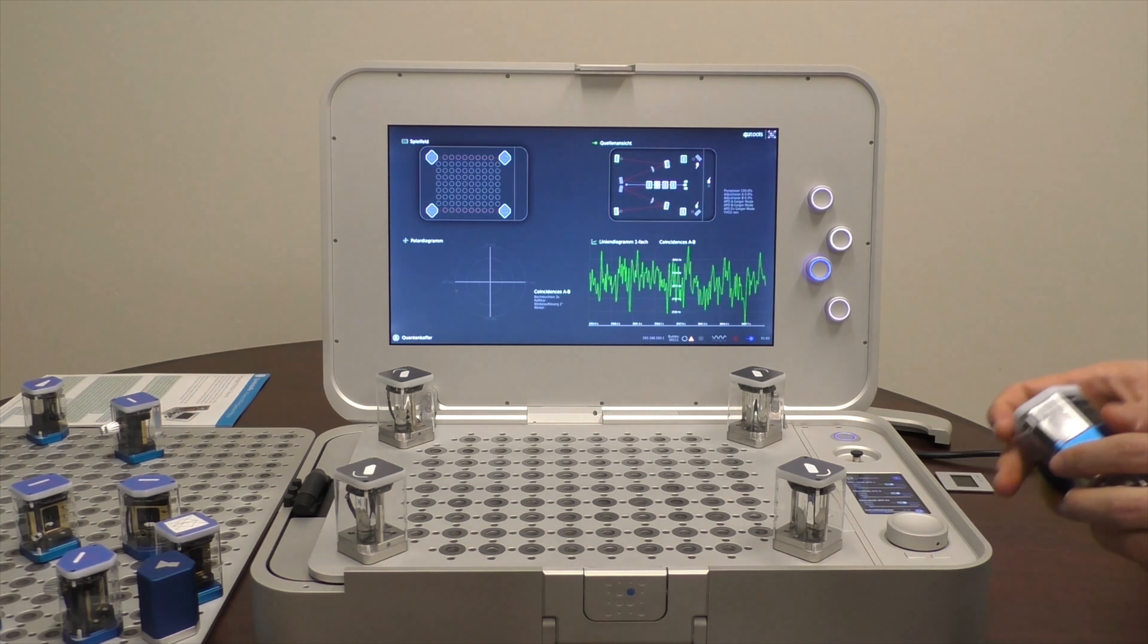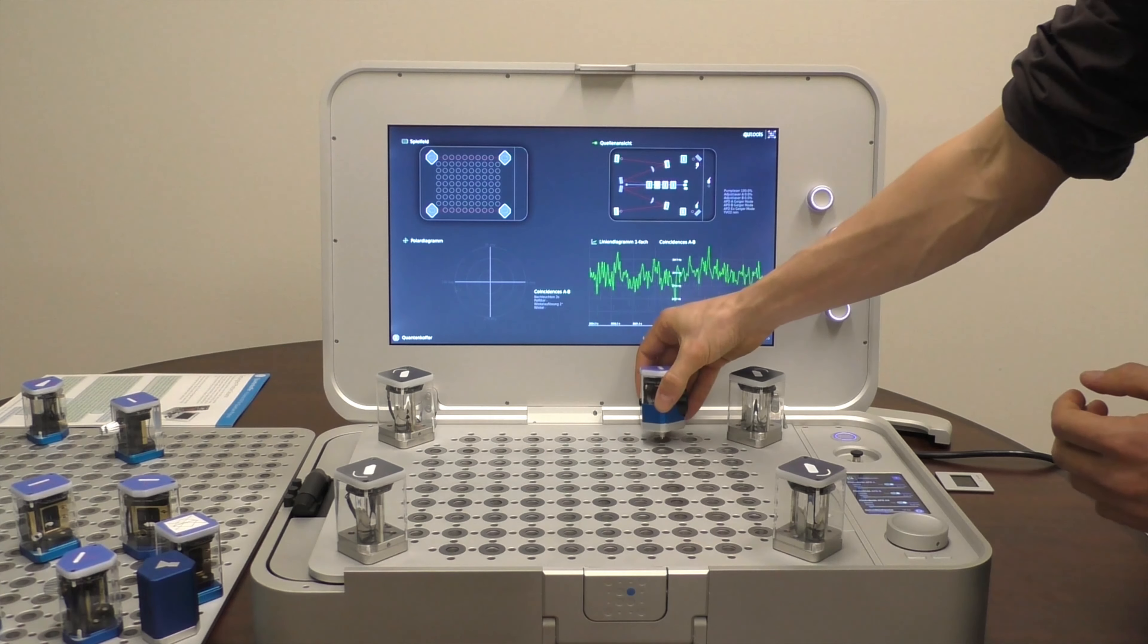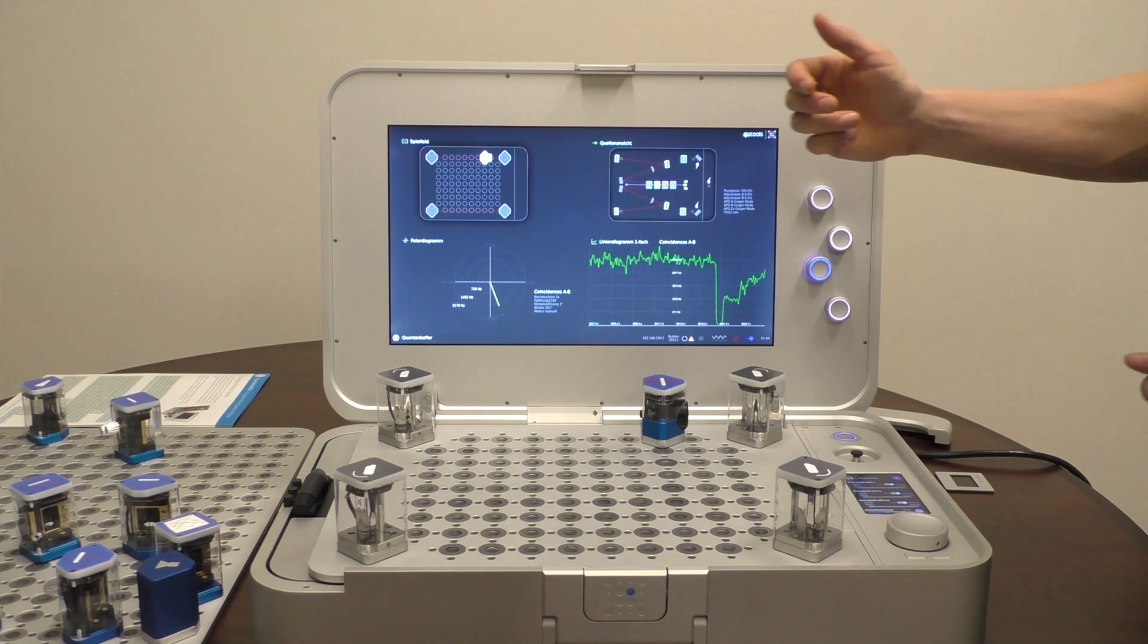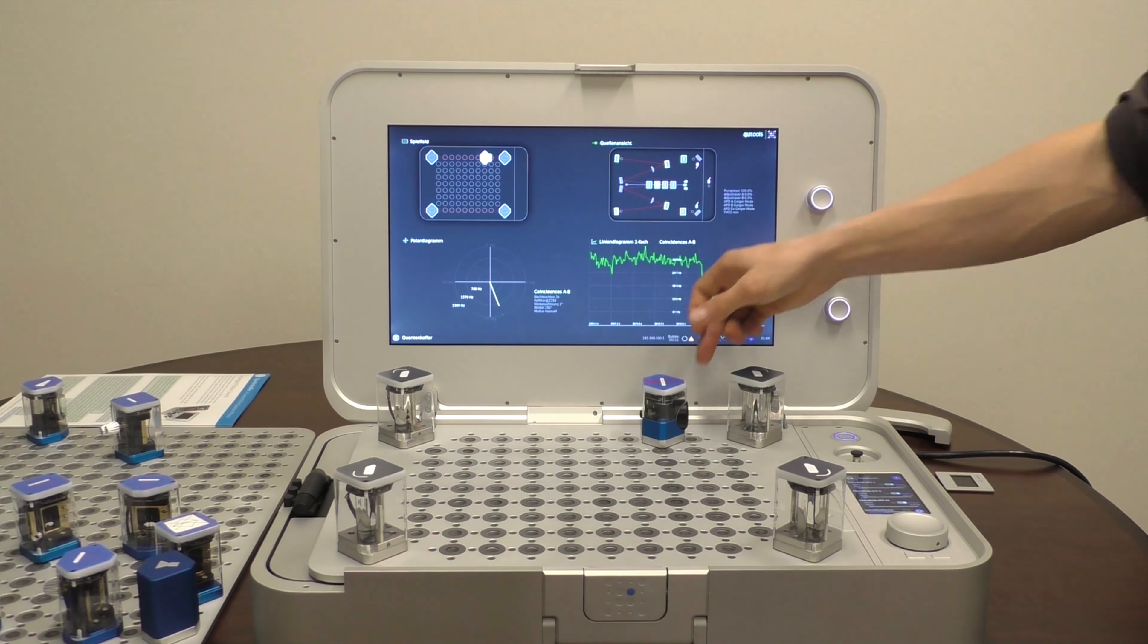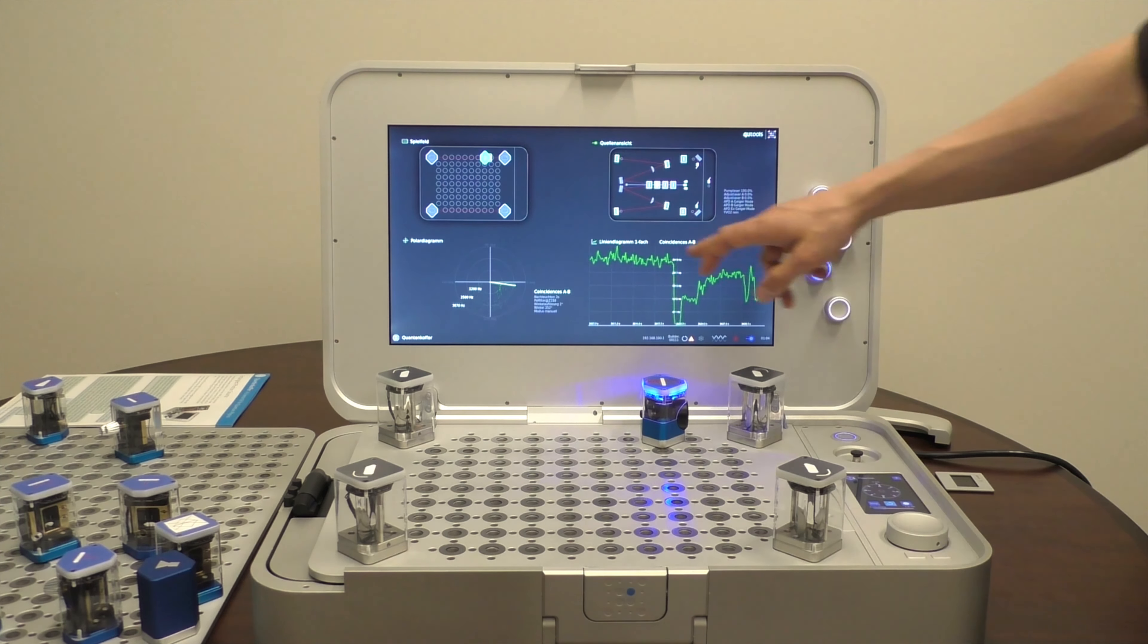So with this one we have entanglement in the polarization degree of freedom, which means we want to measure polarization. For this we have these tokens, these modules that we can insert at this spot in the beam path. In here is just a polarizer, more or less, and we can set this polarizer to different angles and compare the count rate that we measure at different angles.